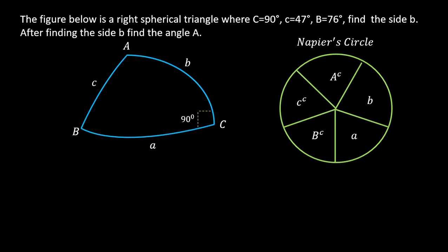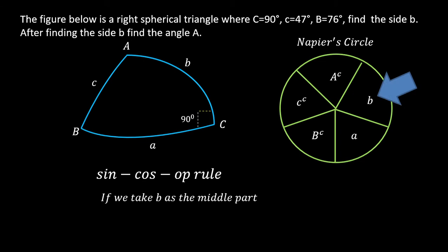To find side B, I first look at what is given: side c = 47 degrees and angle B = 76 degrees. Since the given values are the C complement and B complement — which are opposite to the middle part B — I will use the sin-cos-of rule.